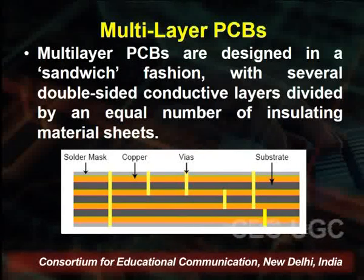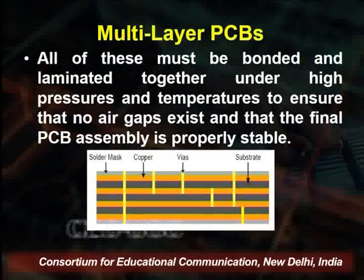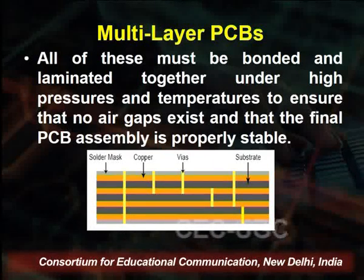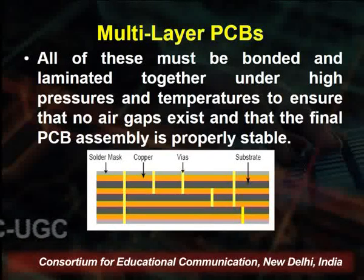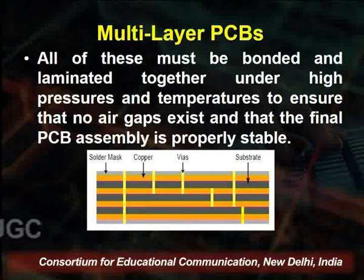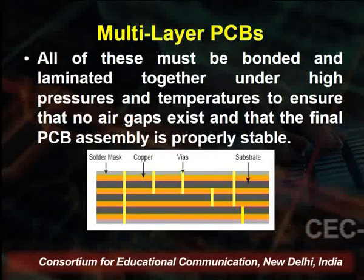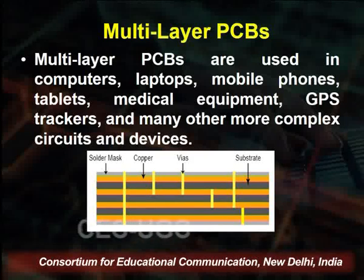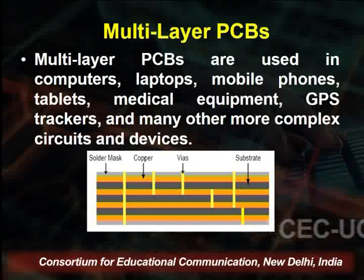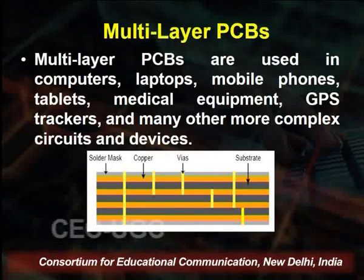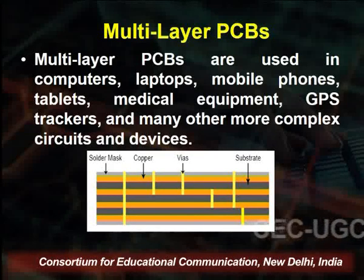The layers are bonded and laminated together under high pressure and temperature to ensure there are no air gaps, so the final PCB assembly is properly secured. On the diagram we see a substrate with copper layers on both sides, then another substrate layer, and so on — with the solder mask on the outer sides. Multi-layer PCBs are used in computers, laptops, mobile phones, tablets, medical equipment, GPS tracers, and many more complex circuits and devices.